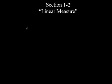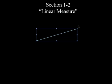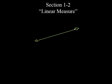In the last section, we talked about a line. Let me draw one for you, just as a quick review. We said the line has arrows on both ends, which means they keep going forever and ever.